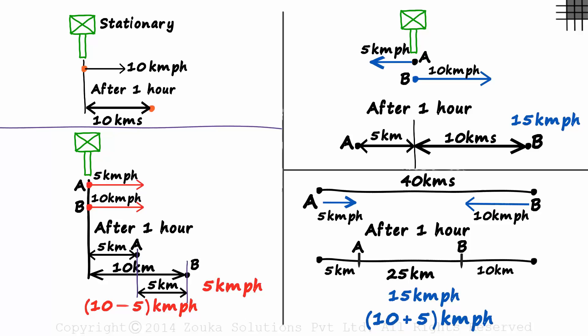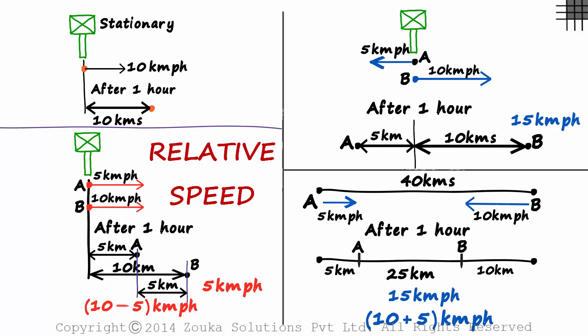So if two things move in the same direction, the relative speed is the difference of the individual speeds. And if they move in opposite directions, the relative speed is the sum of the individual speeds. In the next few sessions, we will look at examples based on the concept of relative speed.